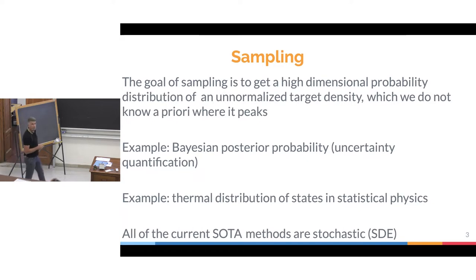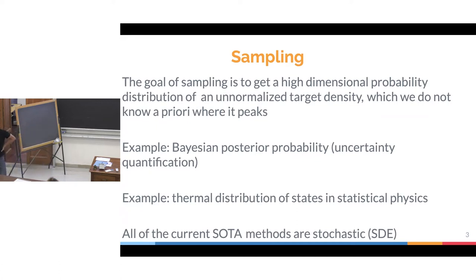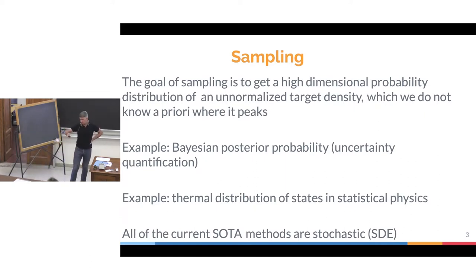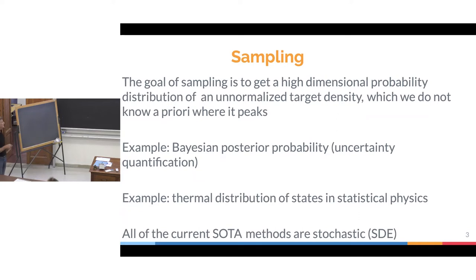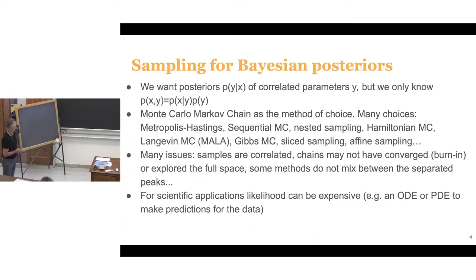Two important examples connecting physics and machine learning are: first, Bayesian posterior distributions in statistics, where we need sampling methods like Markov chain Monte Carlo; and second, statistical physics, where we use these methods to get free energy and thermodynamic quantities such as energy, specific heat, and susceptibility. In both cases we use Monte Carlo methods to sample and then evaluate thermodynamic quantities.